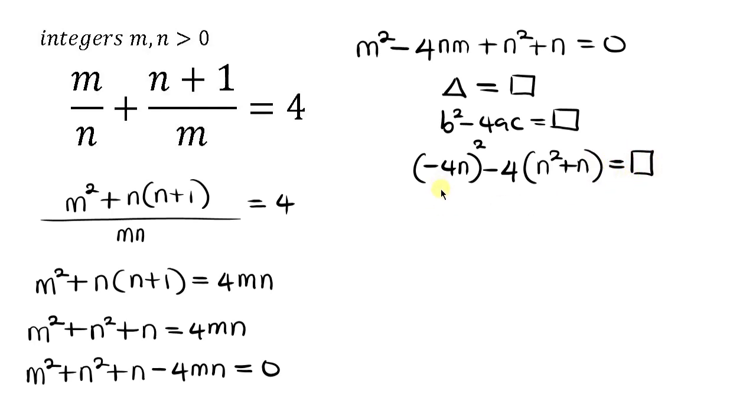So let's simplify this. So negative 4n squared will give 16n² minus. Now let's open up this bracket. We have 4n² - 4n. And this must be a perfect square.